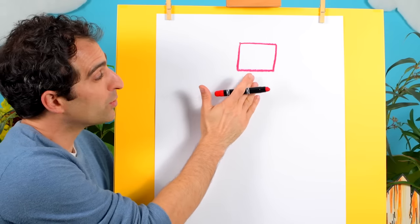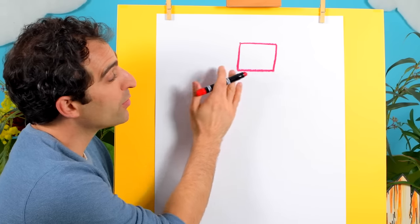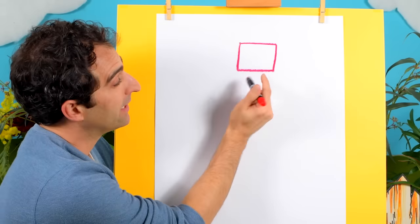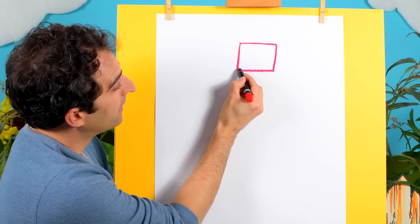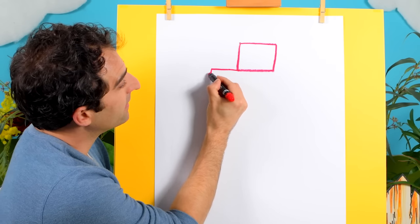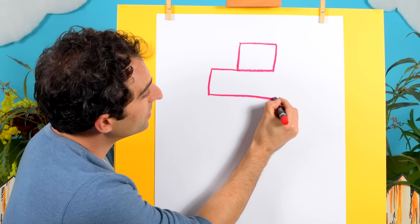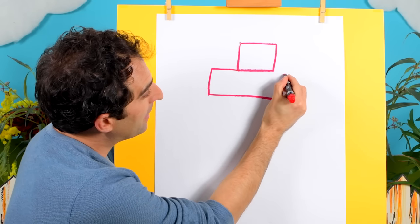Great! Now, we'll draw a rectangle below the square, and it's going to be touching this bottom line. So what we can do is start from here, and draw a line that goes out, down, across, and then back up, and joins up to there.